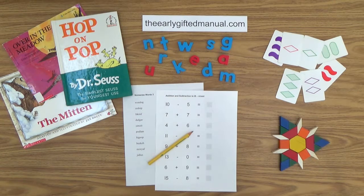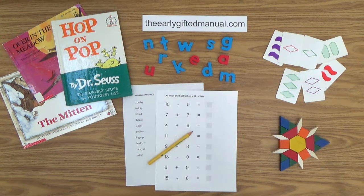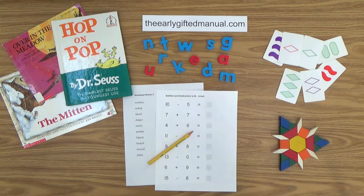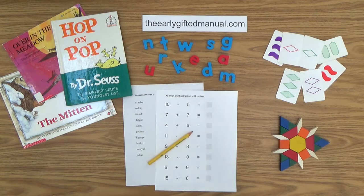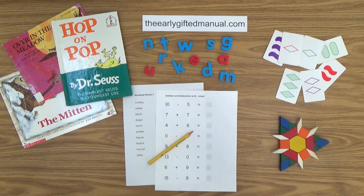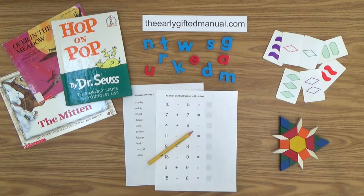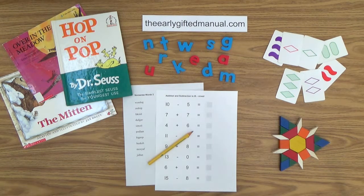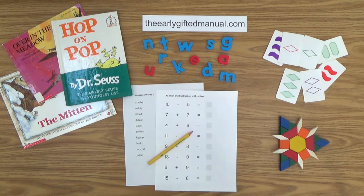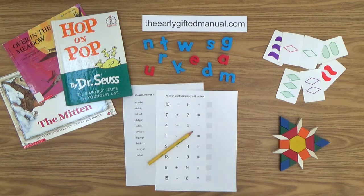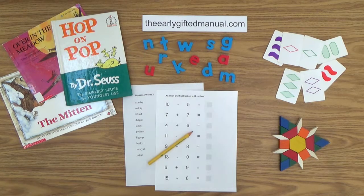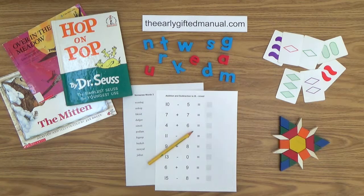As the video lessons are designed to work in conjunction with the program on my website, I ask you to, at some point, click on the URL link in the description box below and this action will take you to theearlygiftedmanual.com. By doing that, you will be able to put this lesson and all of the video lessons here on my channel in the proper context of the total program that I am presenting to you and your child.